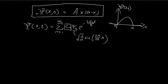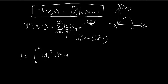We can satisfy this initial condition by locking down these constants. But before we do that, we need to find what the normalization constant A should be. We can deduce A by using the fact that this wave function should be normalized — meaning this integral is equal to 1. So all we have to do now is solve this integral.